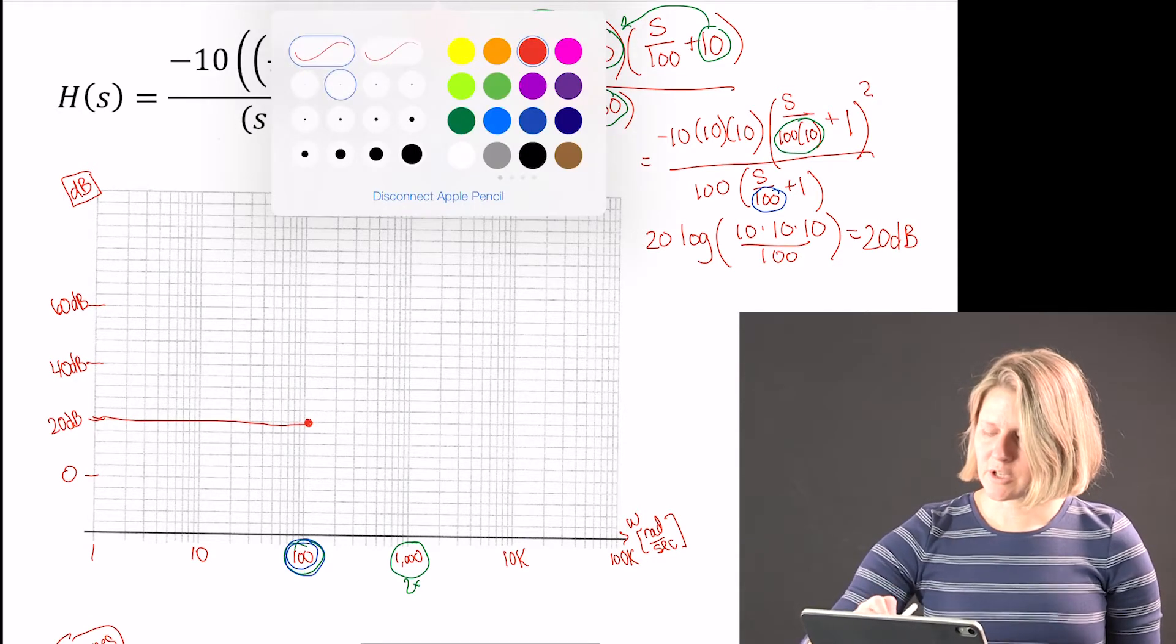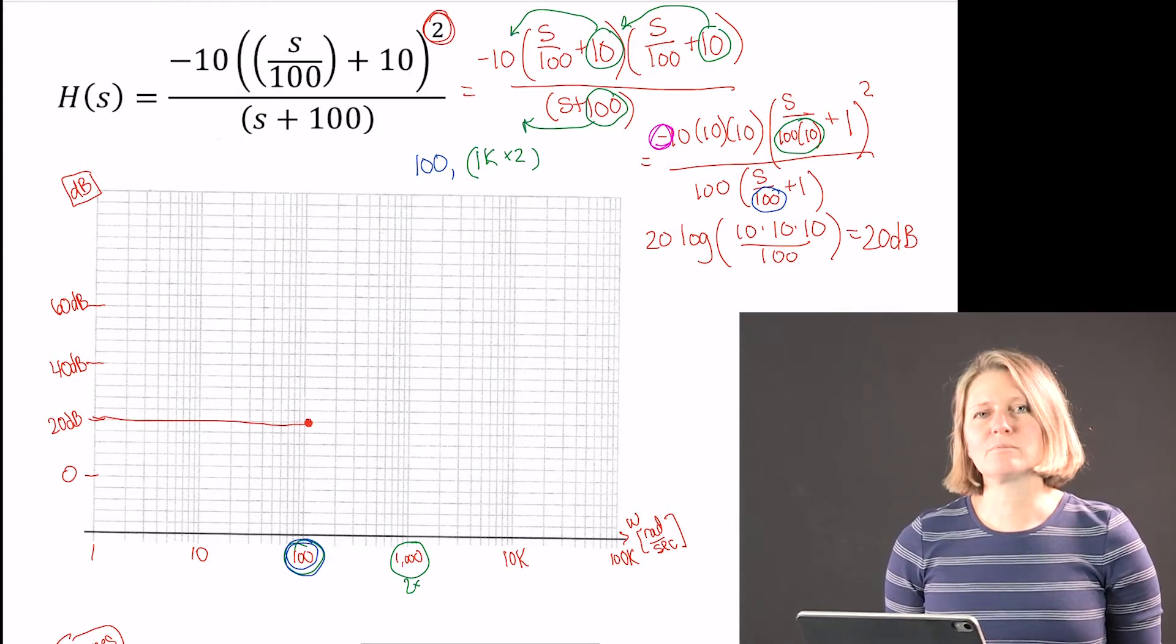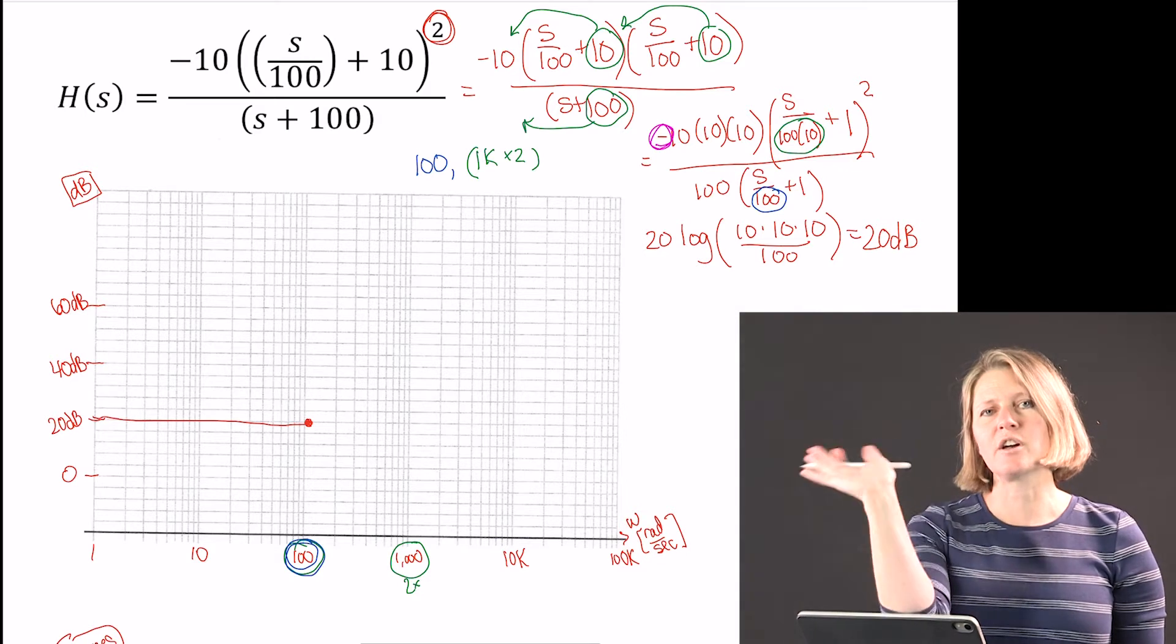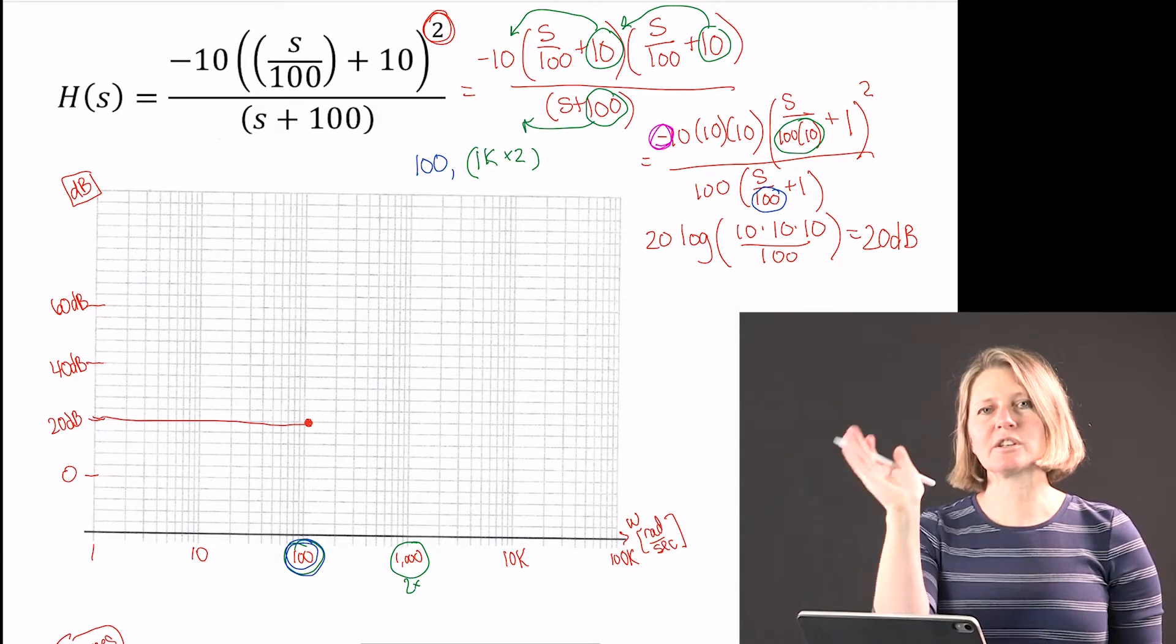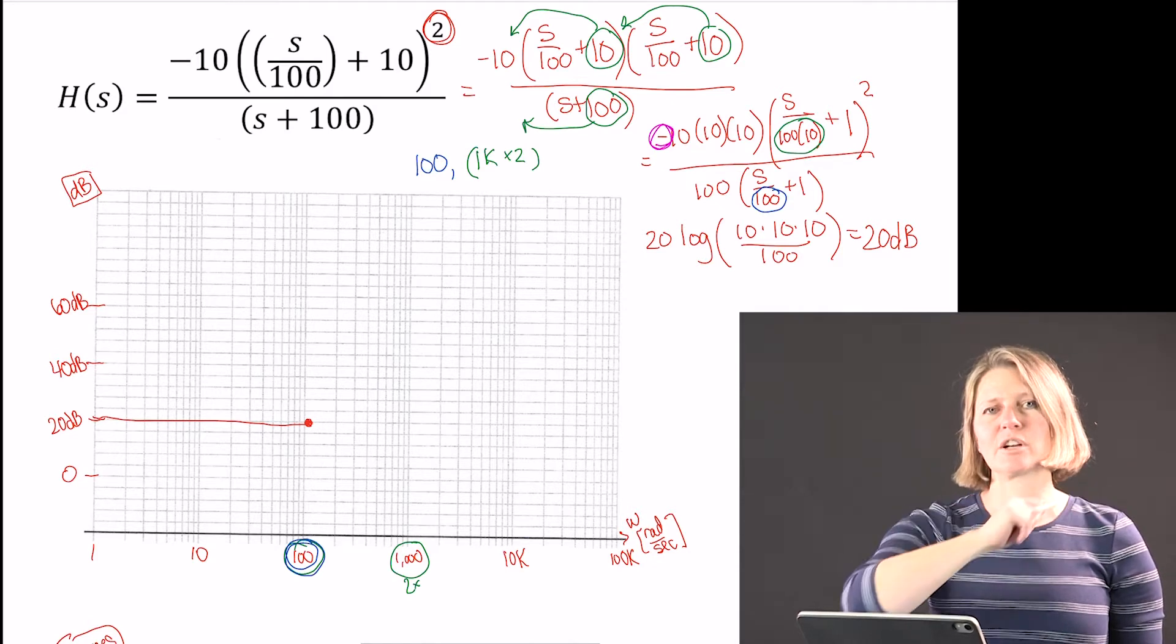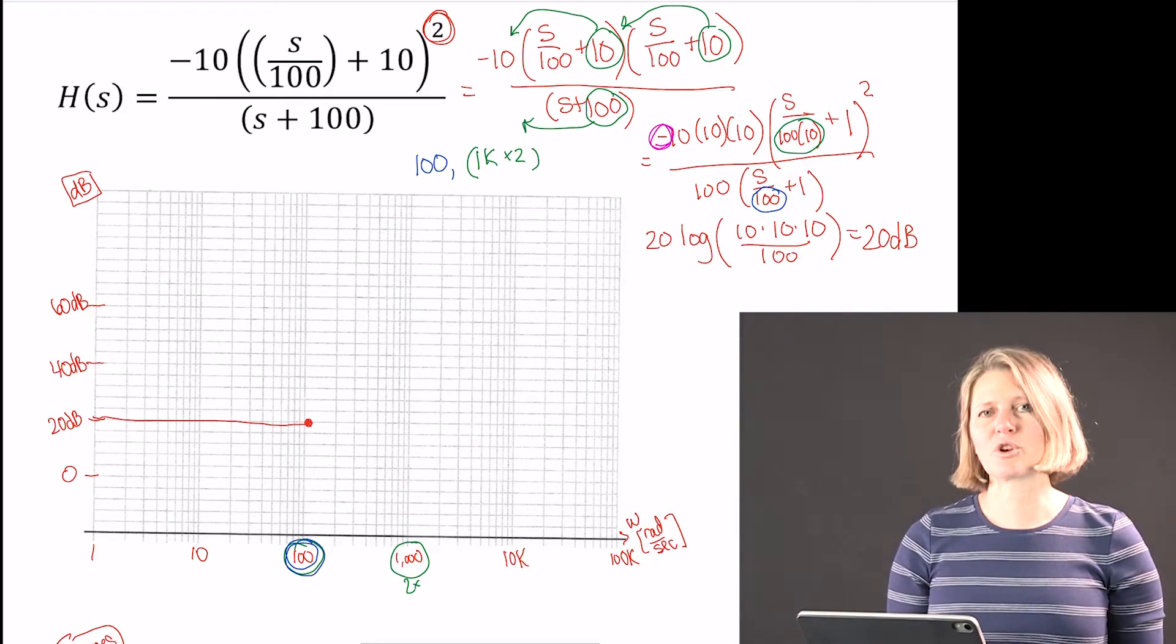Note here that this negative does not change the magnitude at all. All it's going to change is on the axis. Instead of going a positive real, it's going to be a negative real. So all it changes is the phase itself. The negative does not change the magnitude, only the phase.